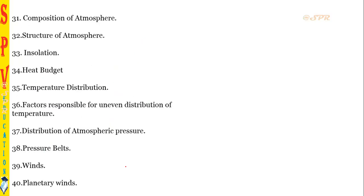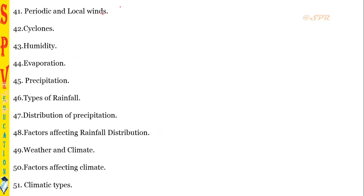Further topics include major earth movements, river landforms, underground water, wind and sea wave landforms, glacier landforms, ocean basins, submarine reliefs, ocean salinity, ocean temperature, tides, ocean currents, the Atlantic Ocean features, the structure of the atmosphere, insolation, heat budget, temperature distribution, atmospheric pressure, pressure belts, planetary winds, periodical and local winds, cyclones, humidity, evaporation, precipitation, types of rainfall, and climate types.